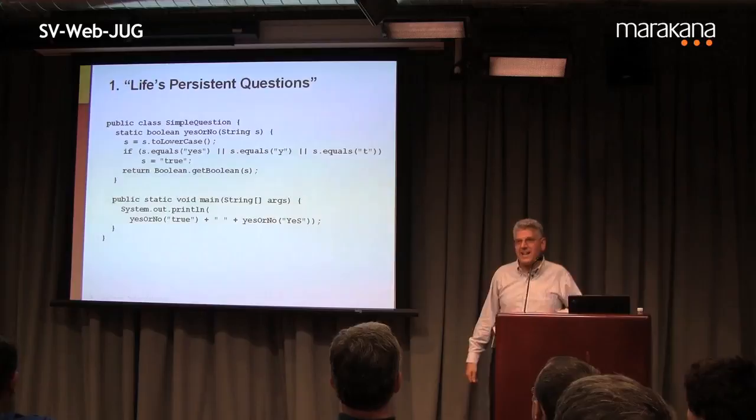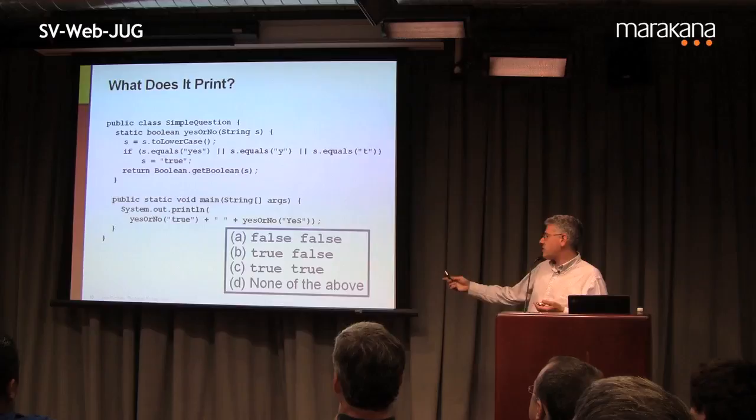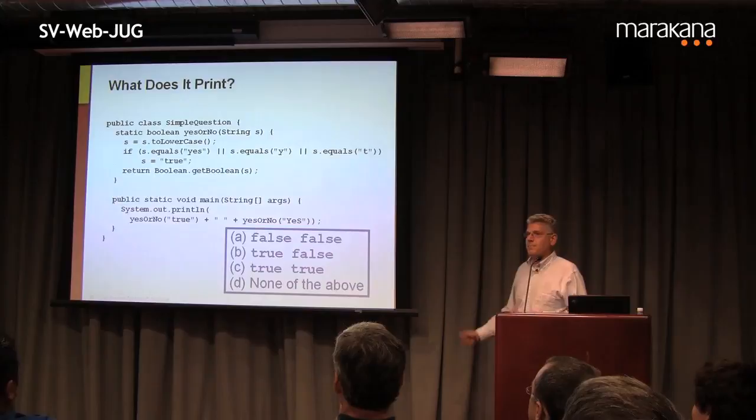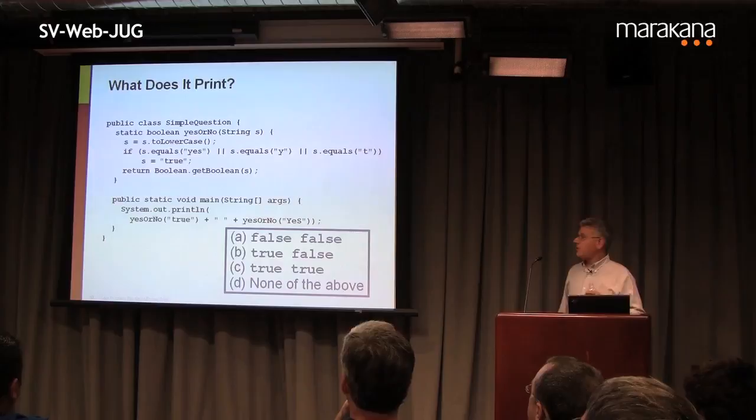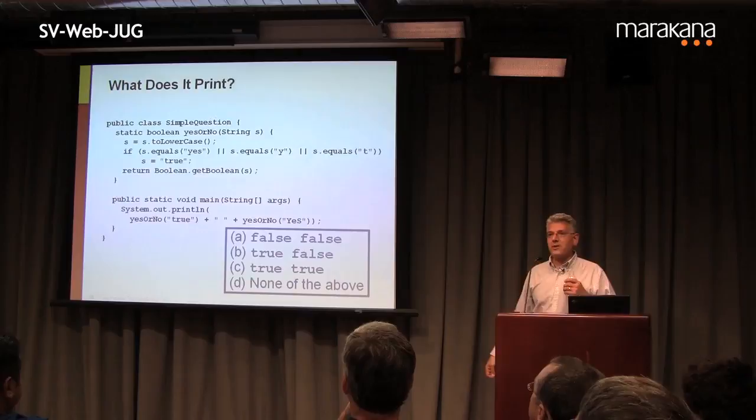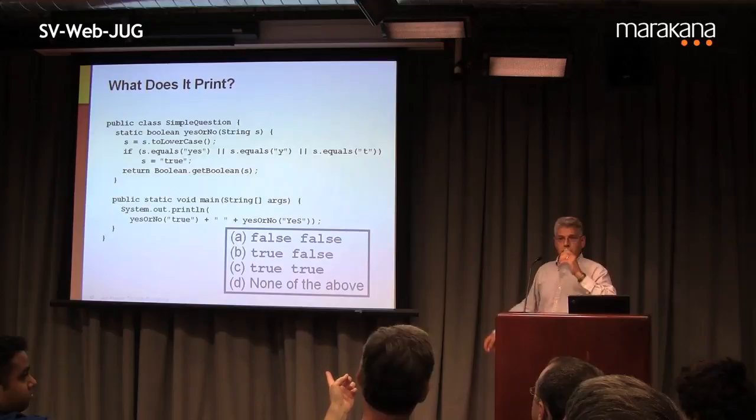You're allowed to talk amongst yourselves, but not type it into Eclipse. The program's main function calls println of yesOrNo on "true" followed by yesOrNo on "YES" with mixed case. So we're parsing two strings with this method. Does it print false false, true false, true true, or none of the above? None of the above could include false true, throws an exception, or varies from run to run.